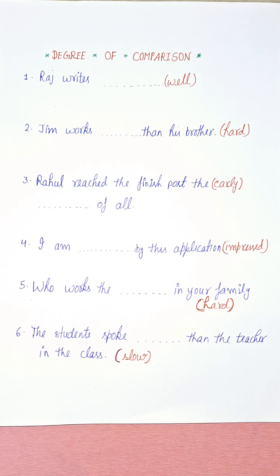There are three degrees of comparison in English. The first is positive degree, the second is comparative degree, and the third one is superlative degree. So let's talk about positive, comparative, and superlative degree.